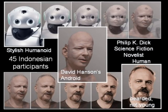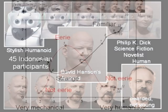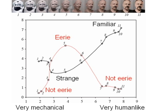I did an experiment with 45 Indonesian participants, and we looked at some morphs going from a mechanical-looking robot to an android to a human being — specifically from Sony's Curio robot to an android made by David Hansen to Philip K. Dick, a now-deceased science fiction novelist. What we found, for example, is that there's a kind of middle ground between a mechanical-looking robot and an android that can be quite eerie. If we look at a strange-to-familiar axis, we also find this kind of uncanny valley.